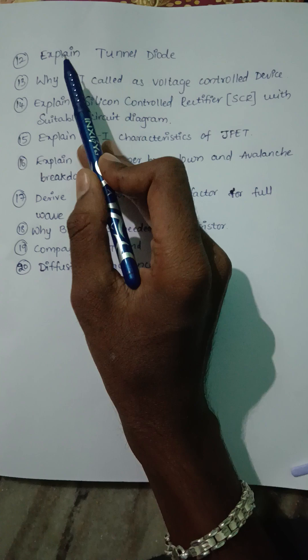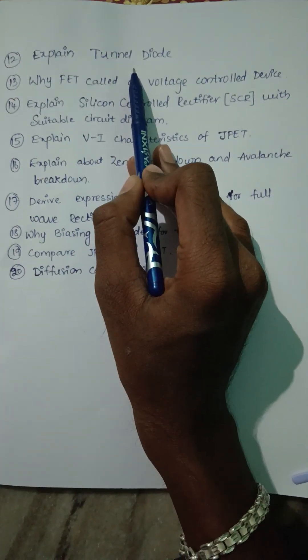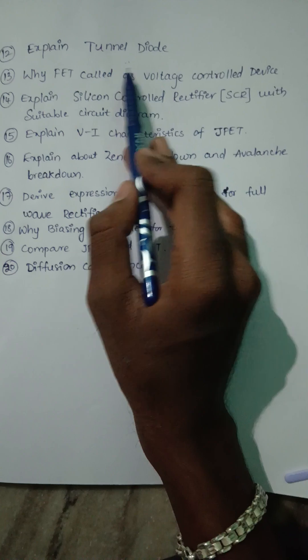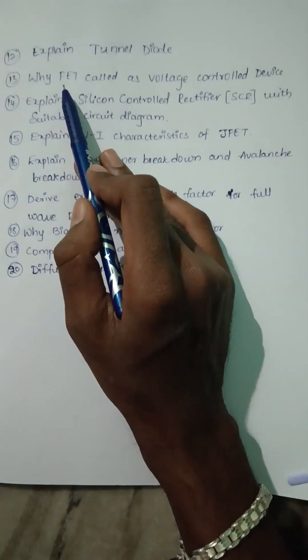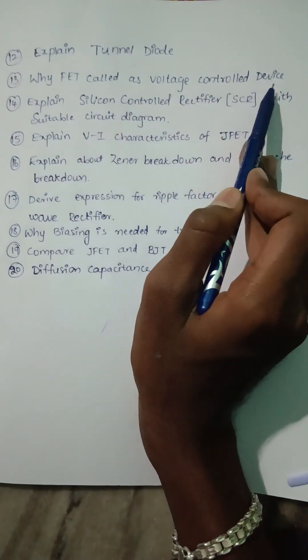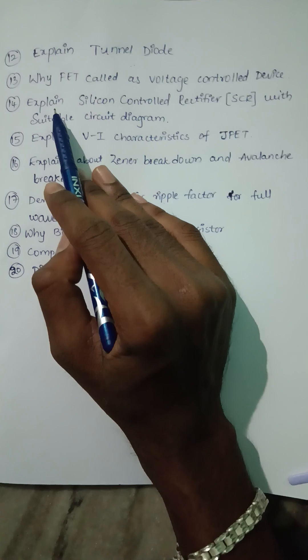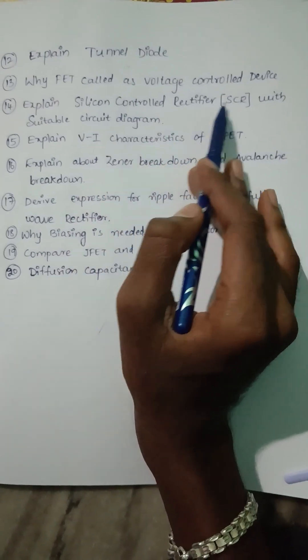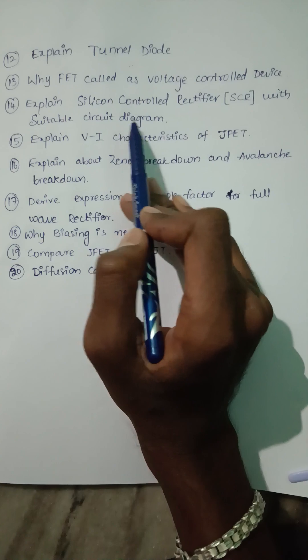Next question is explain tunnel diode with circuit diagram. Another question is why FET is called a voltage controlled device. Then explain silicon controlled rectifier or SCR with suitable circuit diagram.